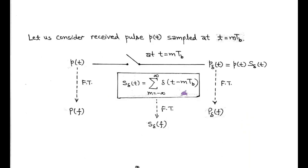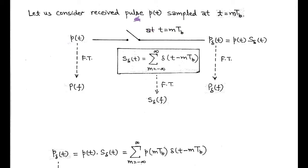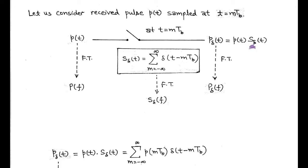Now let us discuss the Nyquist criteria in brief, including the extraction and decoding process. We consider the received pulse p(t) sampled at t equals m*Tb, producing a sampled signal p_delta(t). For the sampling process, we consider a periodic train of pulses denoted by s_delta(t), which equals summation of delta(t minus m*Tb) taking limit m equals minus infinity to plus infinity. The sampled signal p_delta(t) is the product of input pulse p(t) and periodic train s_delta(t) in the time domain. For the frequency domain, we use the Fourier transform. Here, P(f) is the Fourier transform of p(t), S_delta(f) is the Fourier transform of s_delta(t), and P_delta(f) is the Fourier transform of p_delta(t).